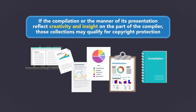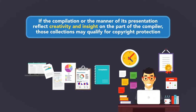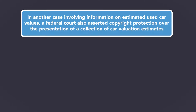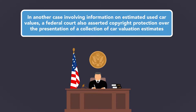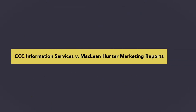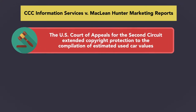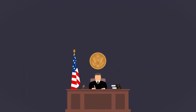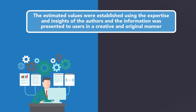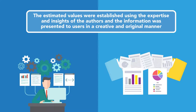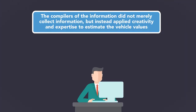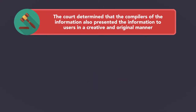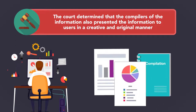If, however, the compilation or the manner of its presentation reflect creativity and insight on the part of the compiler, those collections may qualify for copyright protection. In another case involving information on estimated used car values, a federal court asserted copyright protection over the presentation of a collection of car valuation estimates. In CCC Information Services v. McLean Hunter Marketing Reports, the U.S. Court of Appeals for the Second Circuit extended copyright protection to the compilation of estimated used car values. The key for this court was that the estimated values were established using the expertise and insights of the authors, and the information was presented to users in a creative and original manner. The compilers did not merely collect information, but instead applied creativity and expertise to estimate the vehicle values, and also presented the information to users in a creative and original manner.